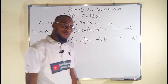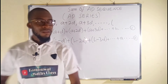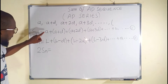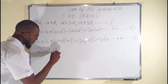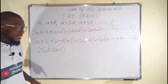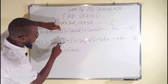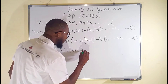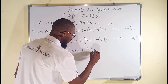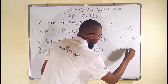Now let us add these two equations together. Sn plus Sn gives us 2Sn. On the right side, a plus L is obtained each time because when we add corresponding terms, the d and negative d cancel out to zero. So every pair of corresponding terms gives us a plus L.